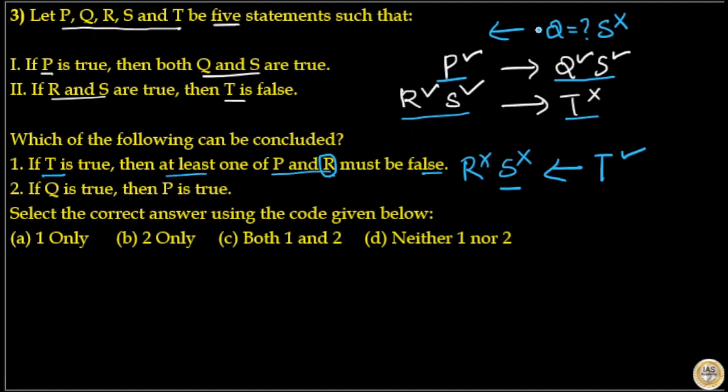P may be true or false because we don't know the status of Q here. So we can't find the status of P, but conclusion 1 is correct.